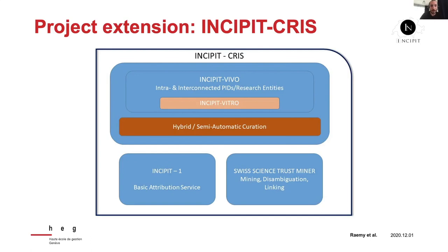For the year 2021, again with funding from Swiss universities, we will continue to develop the infrastructure. The main goal of the Incipit CRIS — that's the new name of the project — is to combine the basic service for assigning ARCs with our current research information system, a CRIS, as well as a set of algorithms for search, disambiguation, and interoperability. More on that at a future CNI meeting, but next year we aim to develop the infrastructure and stabilize the ARC allocating service.